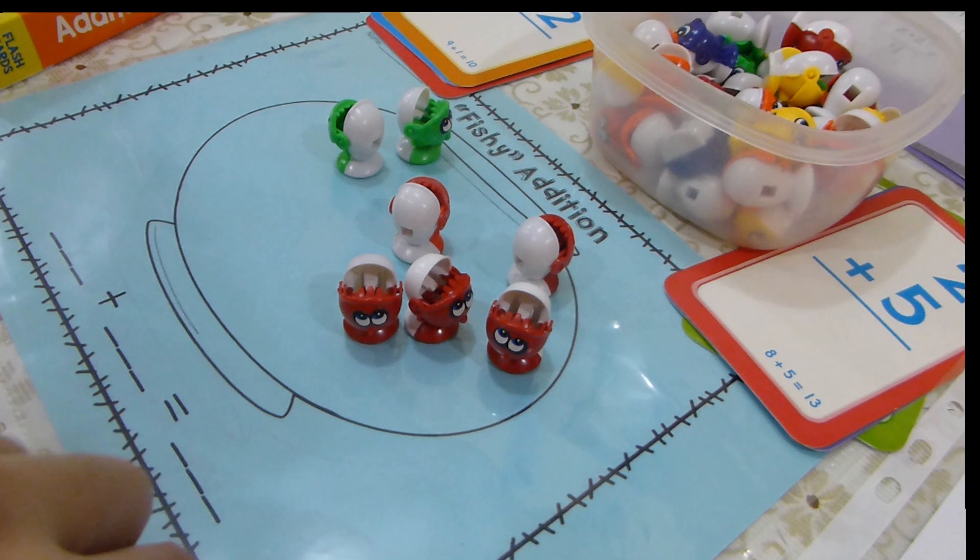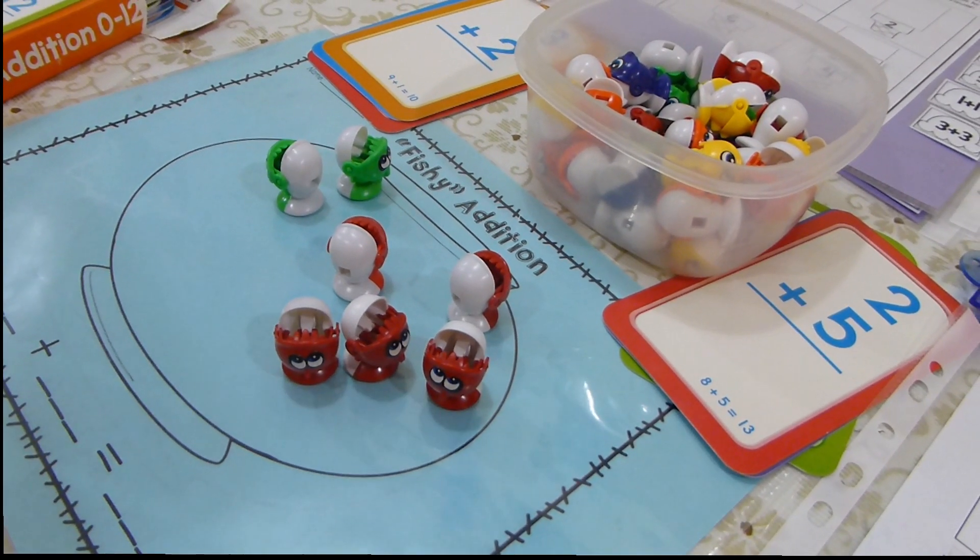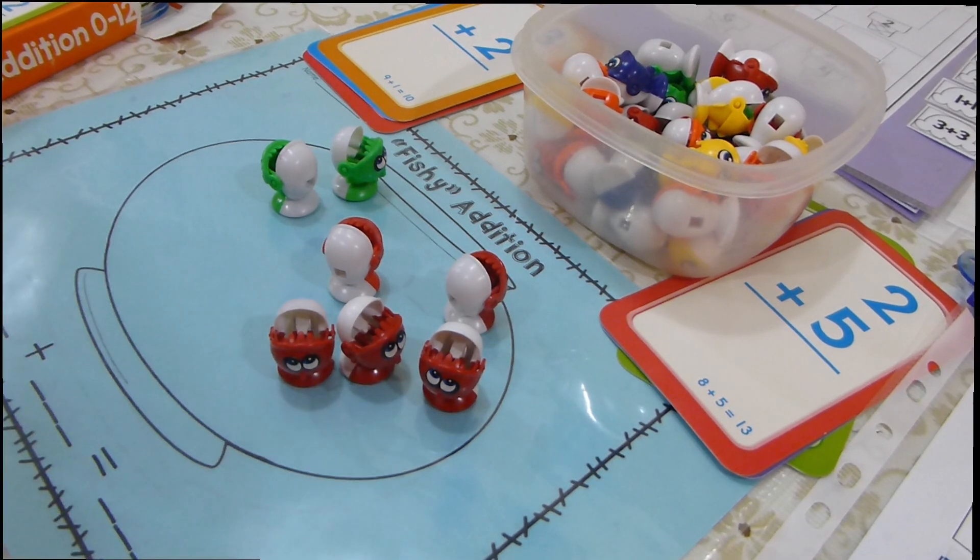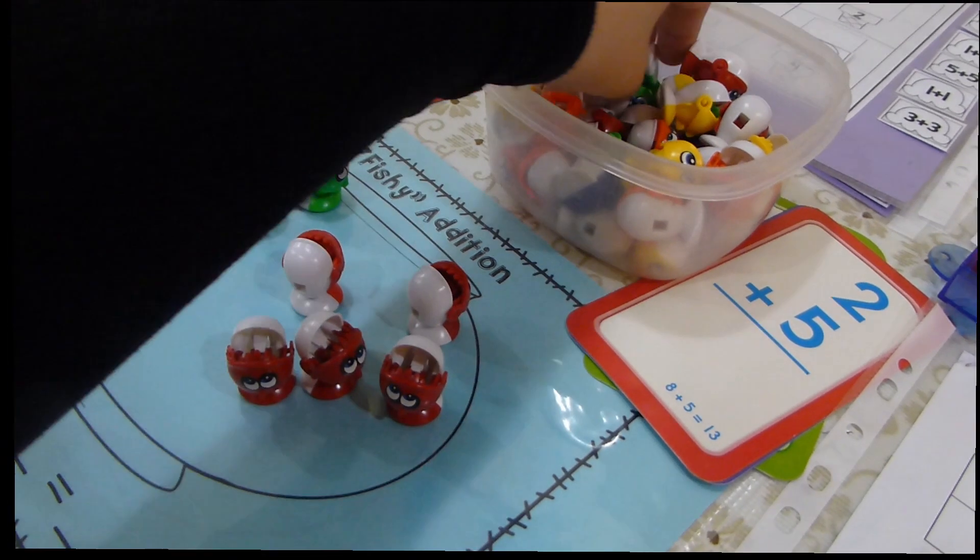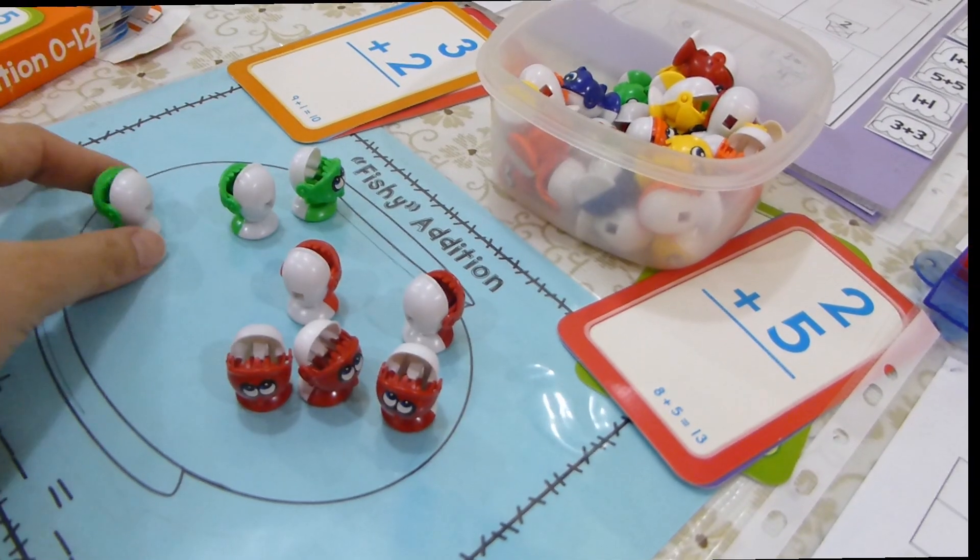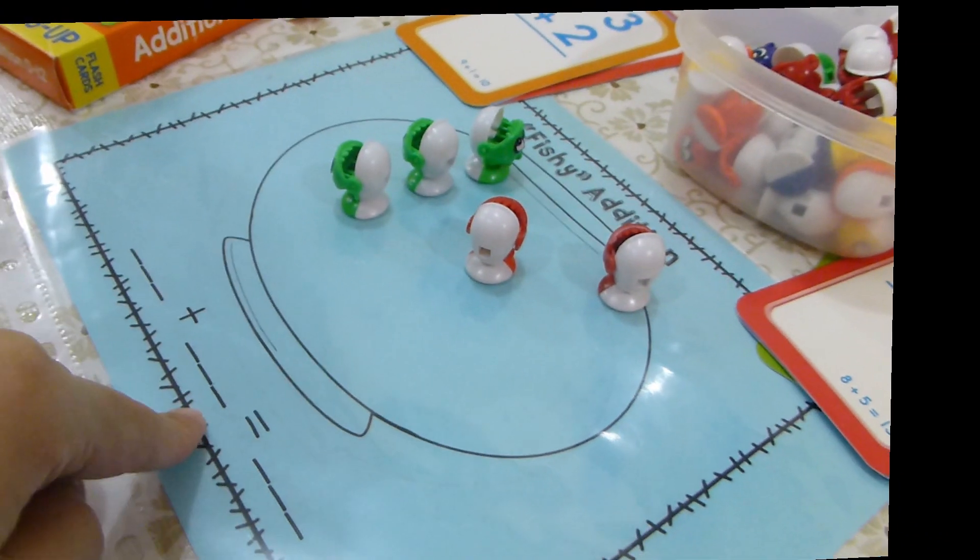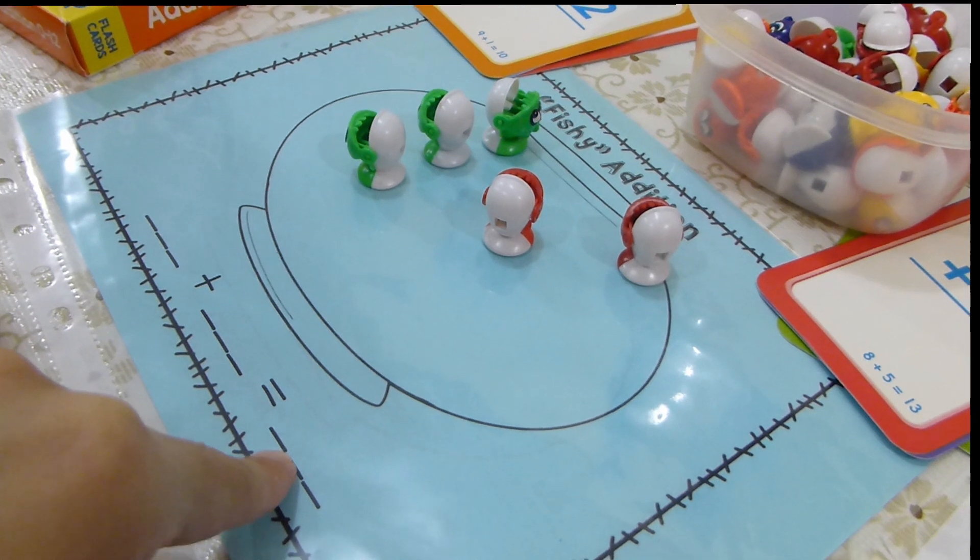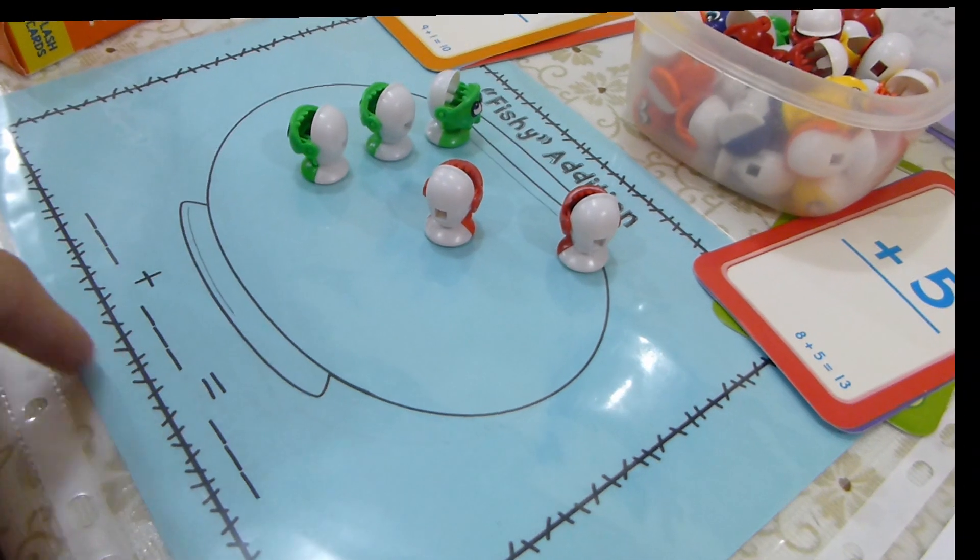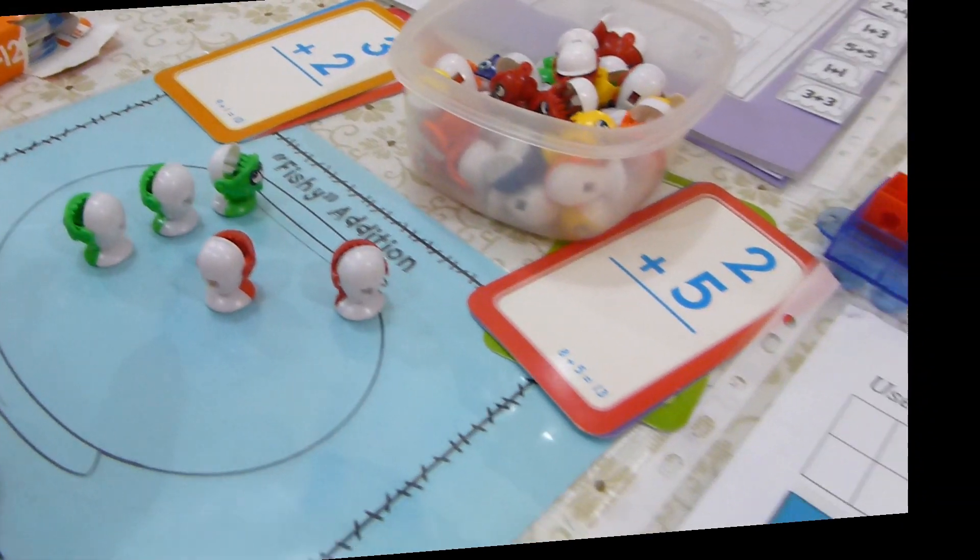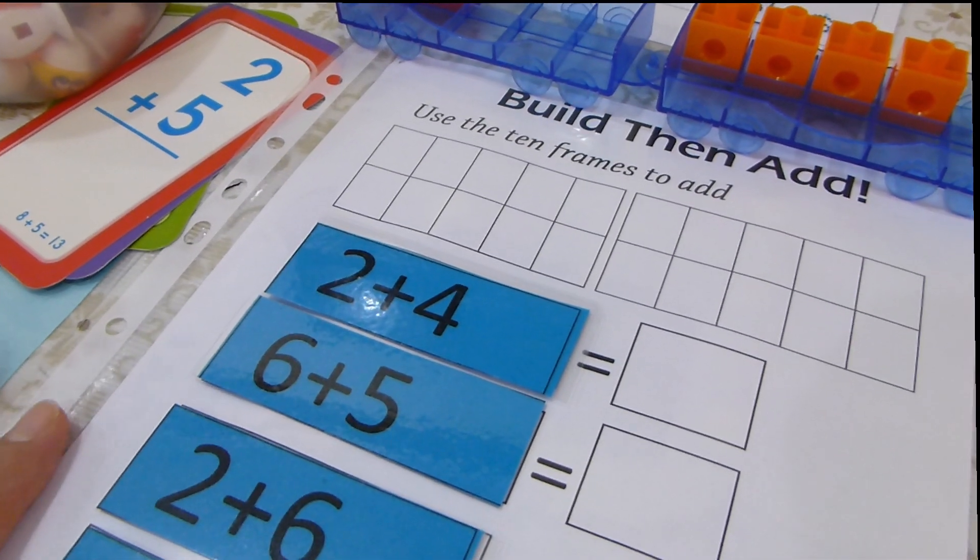When the child does this right, he will get one point. If he does it wrong, he will be asked to do it again and to count the number of fish. Then the other one will take it from here. We have 3 fish and then we have 2 more. He will write down the equation and then count the number of fish. 1, 2, 3, 4, 5. So 3 plus 2 equals 5. And then they can change their cards.